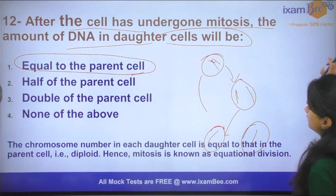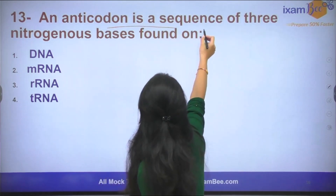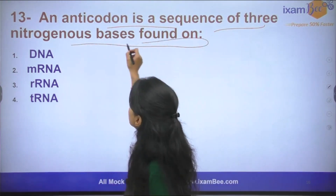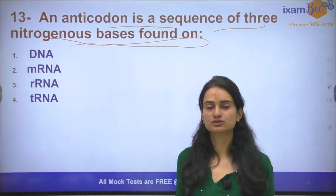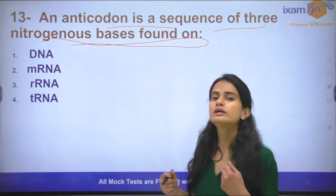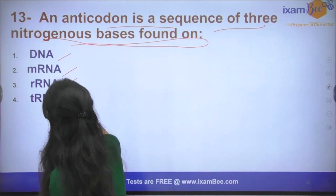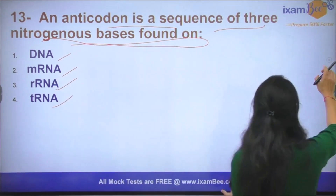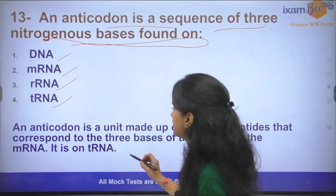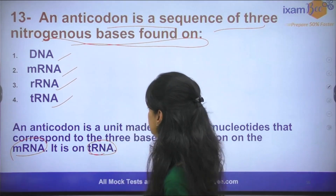Question number 13: An anticodon is a sequence of three nitrogen bases found on which molecule? A codon is recognized by the anticodon, and the anticodon is found on the tRNA.